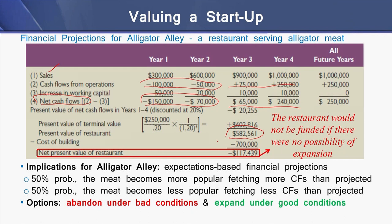To start this project, we need an initial cash outflow — the cost of the building — which is $700,000. The present value of the cash outflow is $700,000, whereas the present value of the cash inflow is $582,000. The resulting present value is a negative NPV of $117,439.